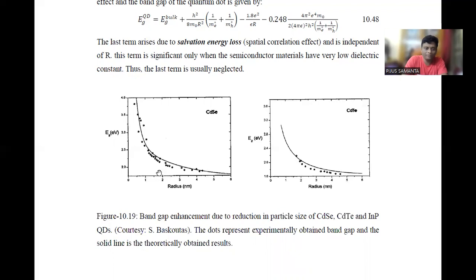Similar types of observations were also reported in case of cadmium telluride. These dots represent the experimental points and the straight lines represent the theoretically fitted data. Thank you.